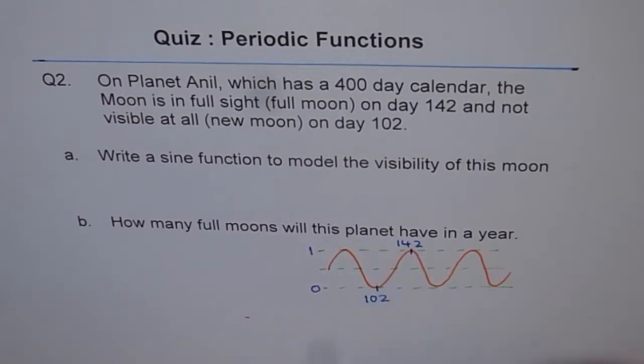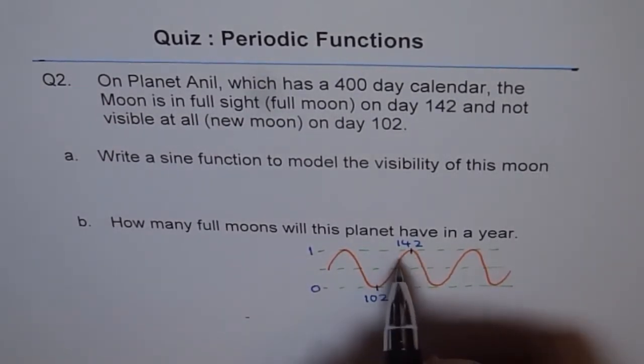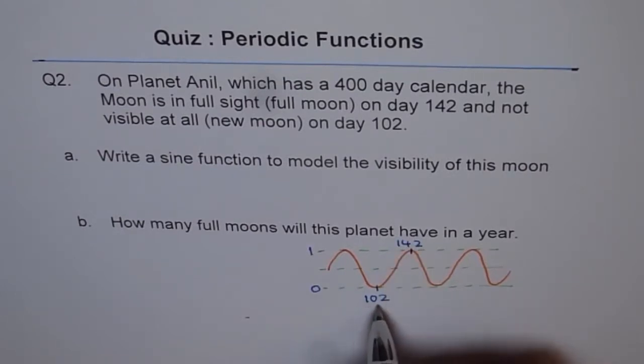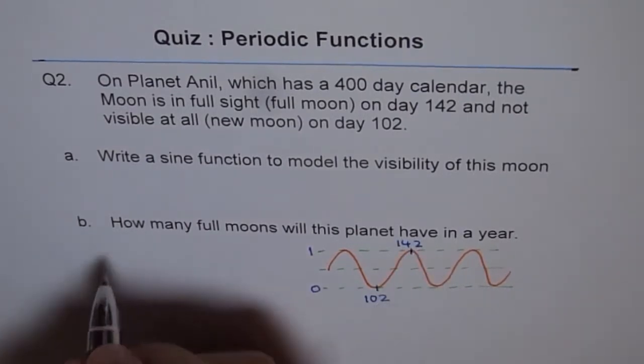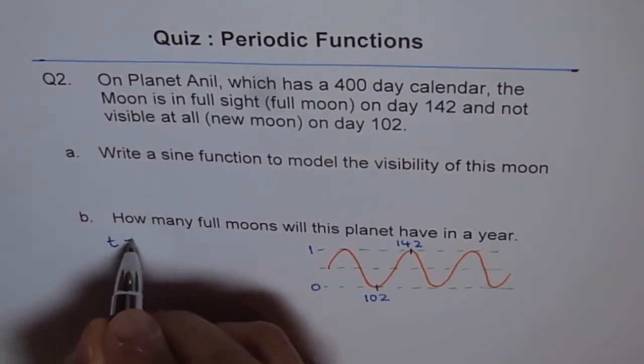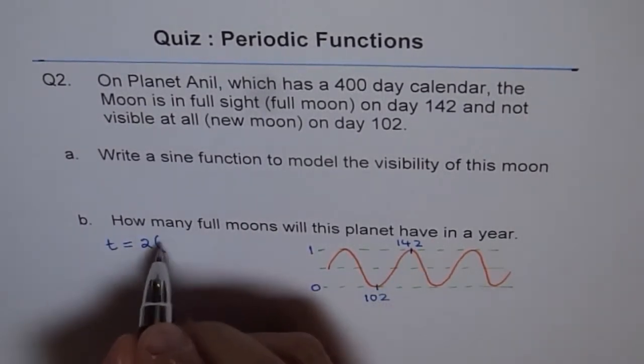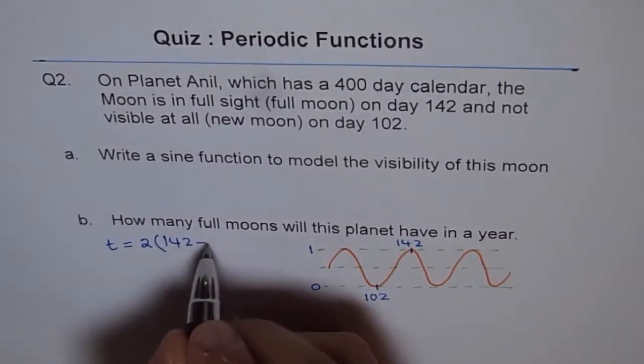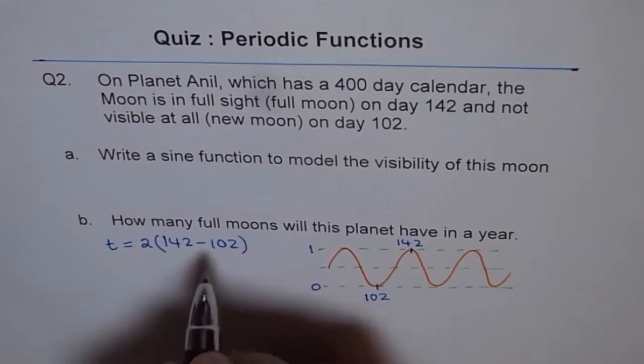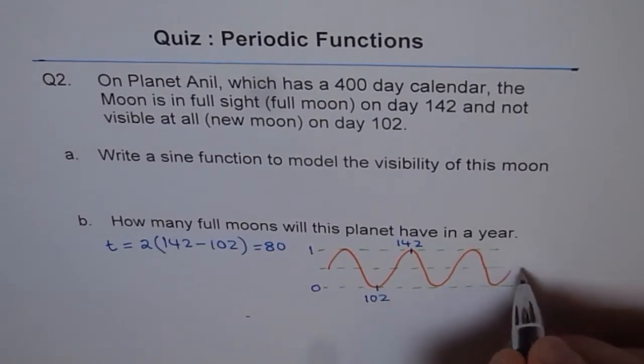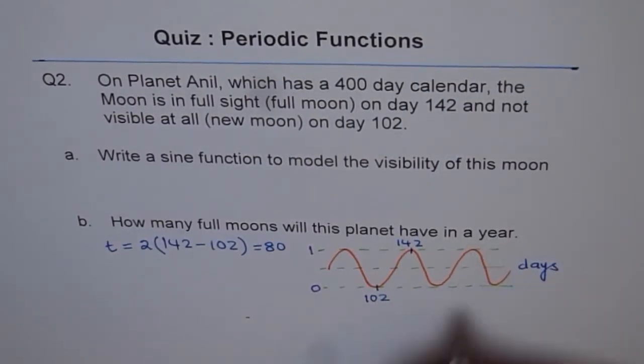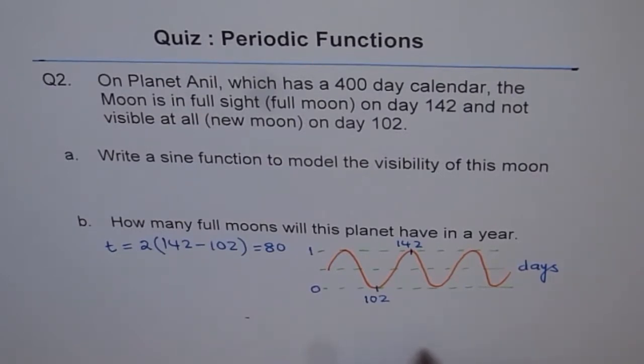Now what is the time period of this wave? Time period is twice between 42 and 102. So distance between or the time along the x-axis is 142 minus 102. So we have time period t which is 2 times 142 minus 102, which is 40 times 2. So it is 80 and the unit is days. As the unit on x-axis. So many days is the time period.